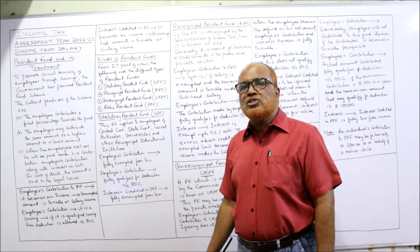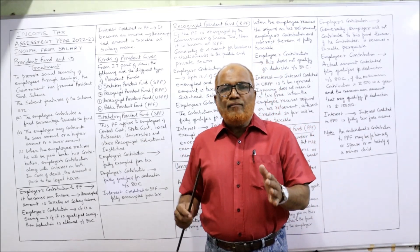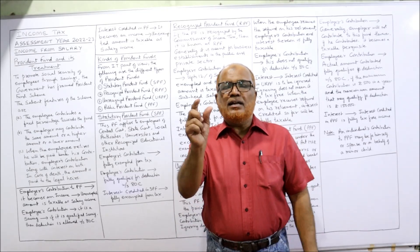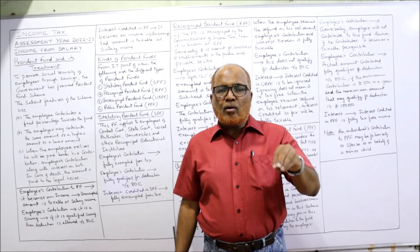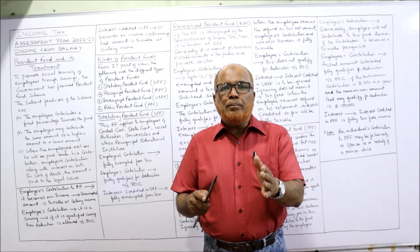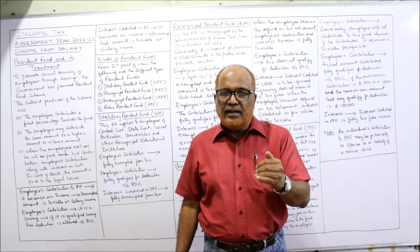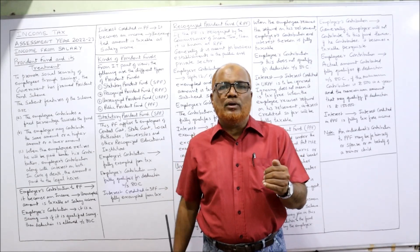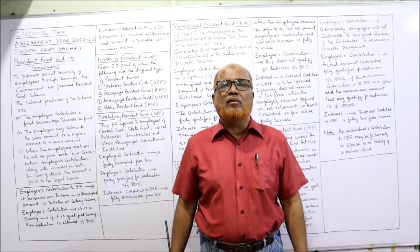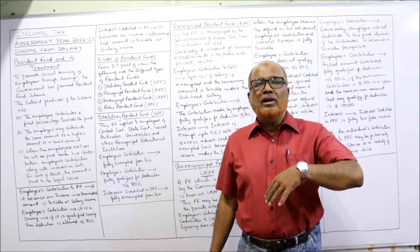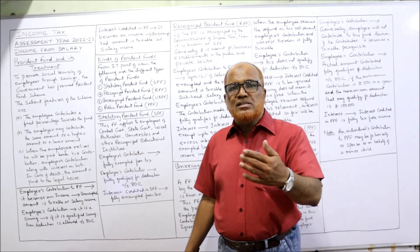The features of the provident fund scheme: the employee contributes a fixed percentage to the fund every month. For example, if an employee's salary is 50,000 per month, 10% — that is 5,000 rupees — will be deducted, and only 45,000 will be paid to the employee. Every month 5,000 rupees are deducted from salary and deposited in the provident fund scheme. So the employee contributes a certain percentage of salary to the fund.